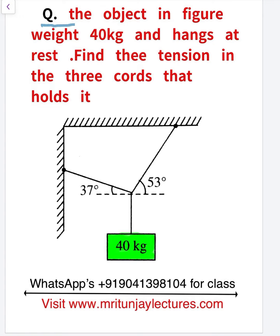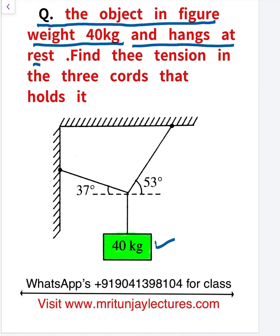Now, question of the day: the object in the figure weighs 40 kg and hangs at rest. Find the tension in the three cords that hold it. So we need to determine tension in all strings. If this string has tension T1, here T2, and here T3, then we need to determine all tensions.